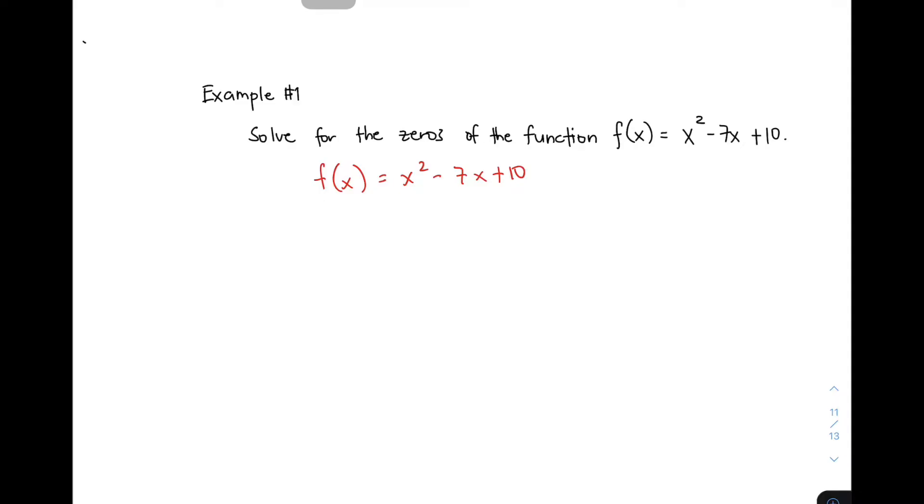Next thing you need to do is to change f(x) as zero. Again, the next step is to change f(x) equal to zero because our target here is to convert this as a quadratic equation. You have now 0 = x² - 7x + 10. Then, by reflexive property, we can rearrange our equation as x² - 7x + 10 = 0.